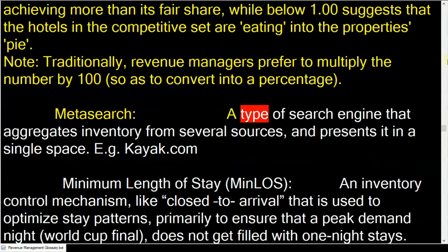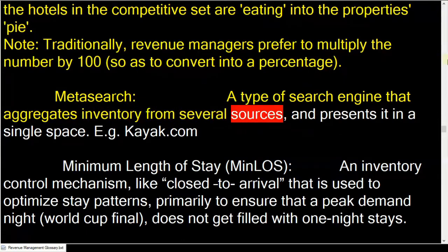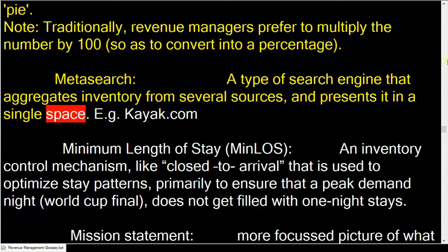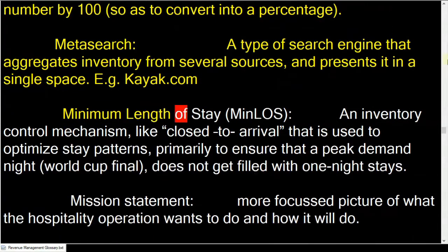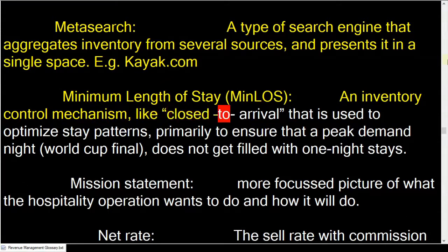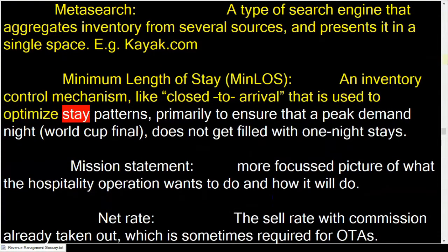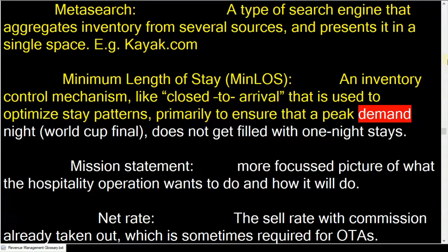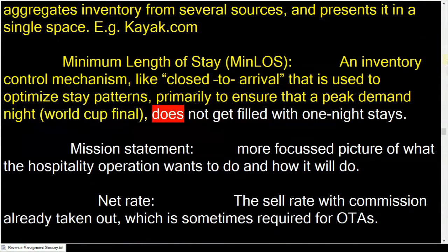Meta-search: a type of search engine that aggregates inventory from several sources and presents it in a single space, e.g., Kayak.com. Minimum length of stay: an inventory control mechanism, like closed to arrival, that is used to optimize stay patterns, primarily to ensure that a peak demand night does not get filled with one-night stays.